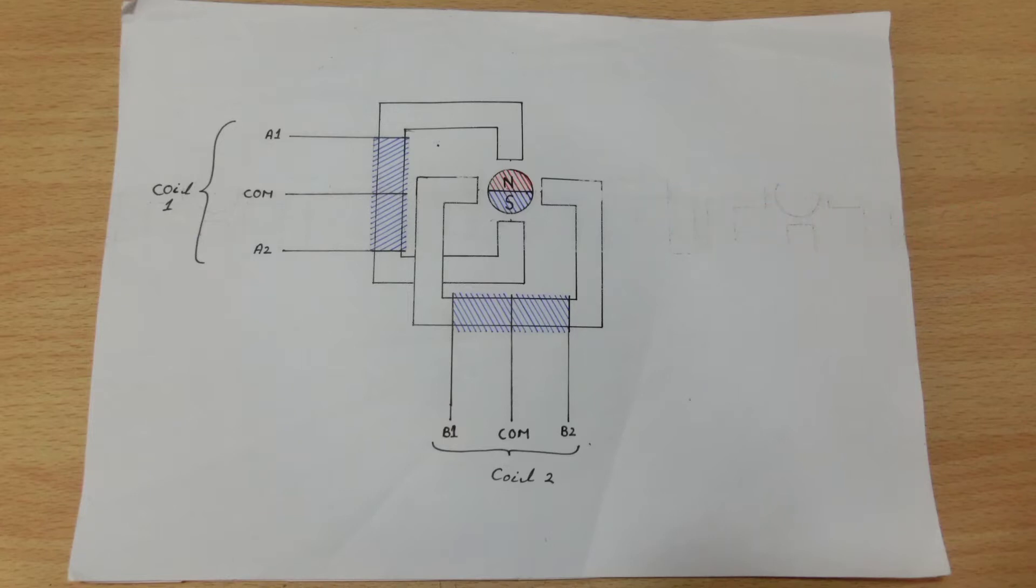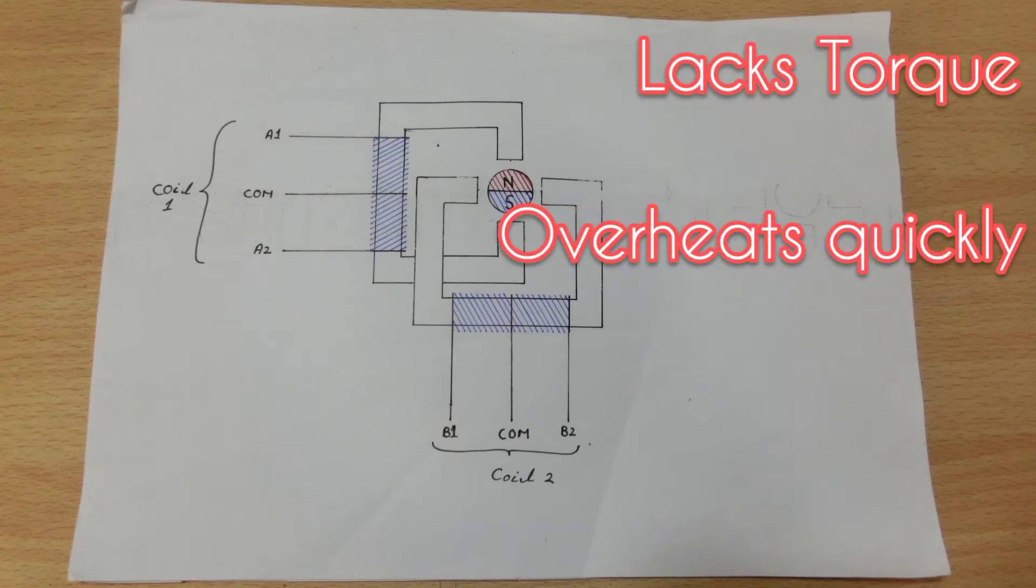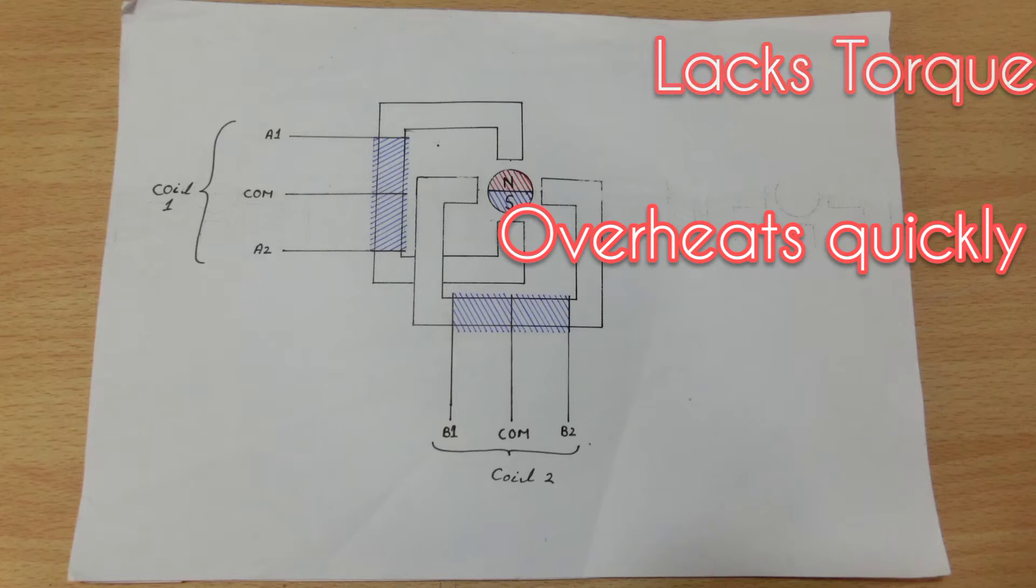The disadvantage of this motor is that it lacks torque and overheats very quickly. Due to the center tap, we are essentially using half of the coil, so as a result we get less torque. The current in the coils cannot be easily controlled so the motor overheats very quickly. The coils are made of thin wire in order to compensate for the center tap. So due to the increased resistance the current increases and thus the motor heats up more quickly.